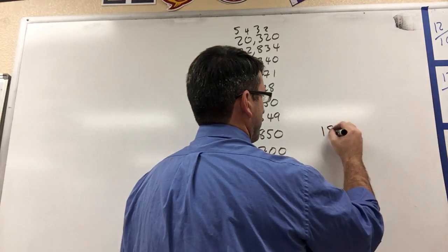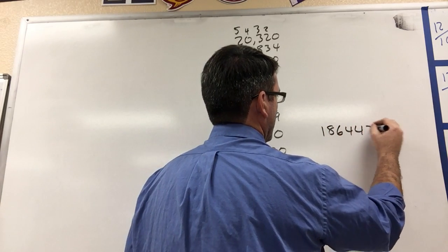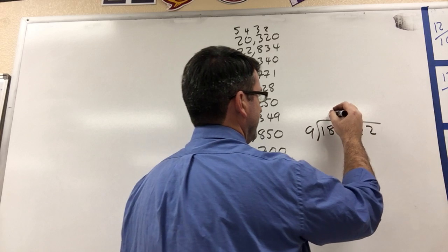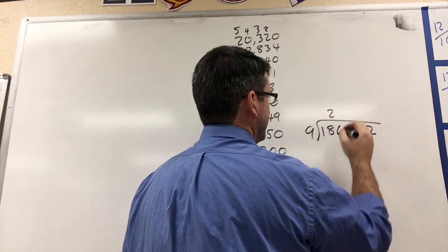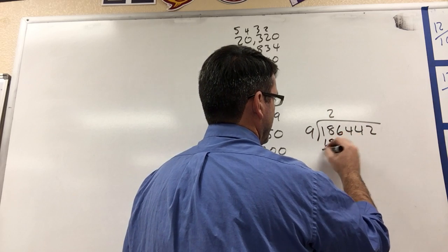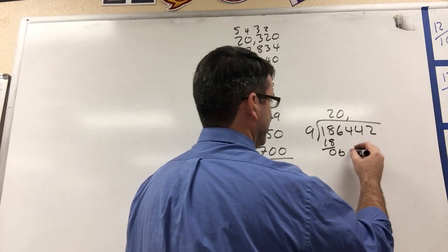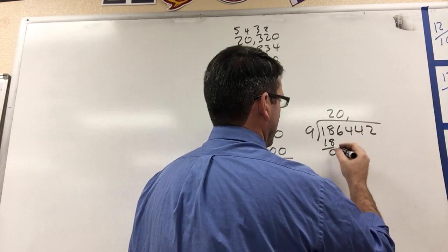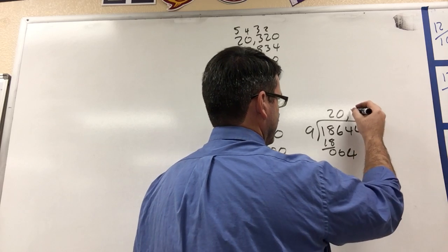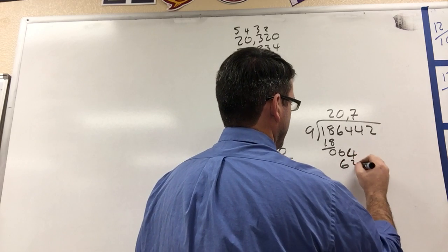and then we're going to divide that by nine. Nine goes into 18 twice. And then, so 20, nine goes into 64, seven times, that's 63.